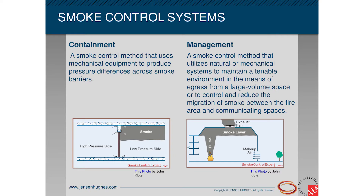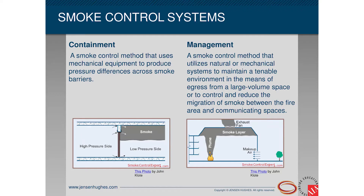There are two design approaches for smoke control systems: containment and management. In a single building you can have one or both. Containment is the use of zones and pressure differences to effectively keep smoke from spreading. Examples include stair pressurization, elevator shaft pressurization, pressurized vestibules, and smoke-protected areas of refuge. One side of the wall is positively pressurized and the other side is negatively pressurized — that's where you want to keep the smoke. People in healthcare might be familiar with this for contamination control — it's the same concept.